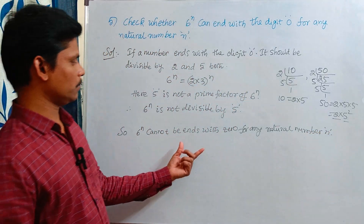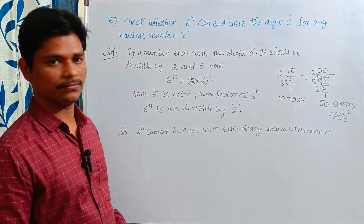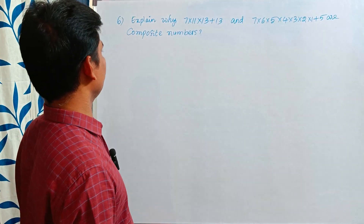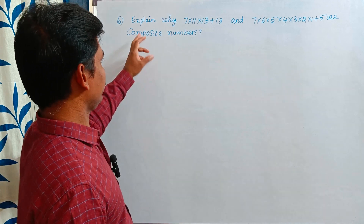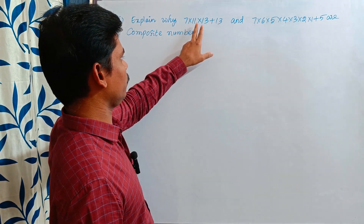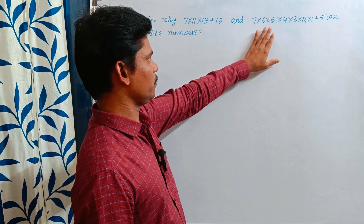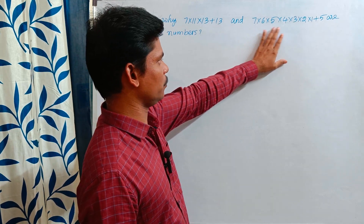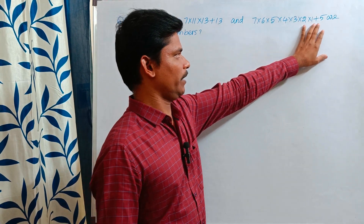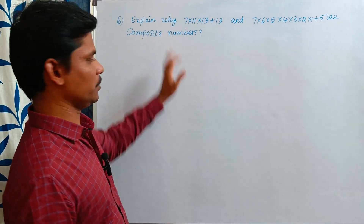This is about the fifth question. Next question, sixth one: explain why 7 × 11 × 13 + 13 and 7 × 6 × 5 × 4 × 3 × 2 × 1 + 5 are composite numbers.